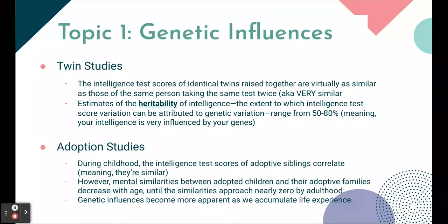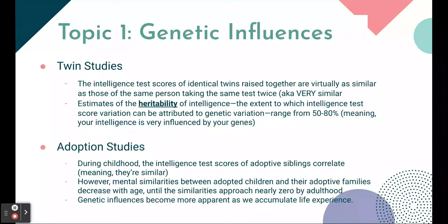Another way to look at genetic influences is through adoption studies. During childhood, intelligence test scores of adoptive siblings correlate — they're pretty similar — because they're growing up in a similar environment even though they're not genetically related. However, similarities between adopted children and their adoptive families decrease as they get older, approaching nearly zero by adulthood, meaning genetic influences become more apparent as we accumulate life experience. But we're all individuals, and this is just what various studies have shown.